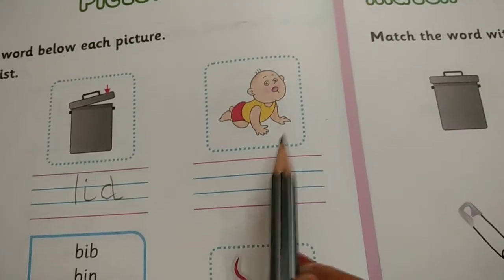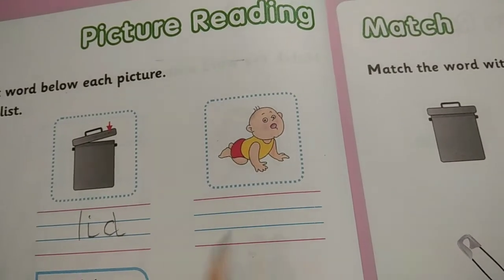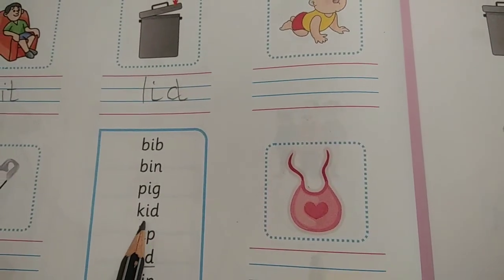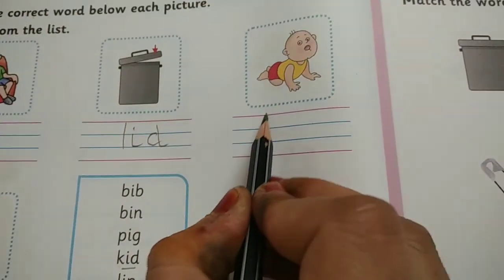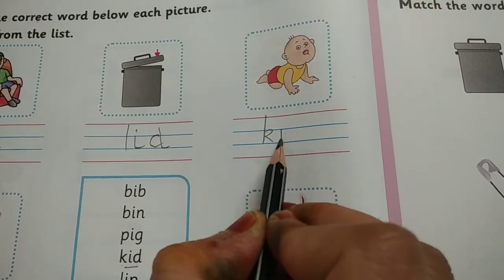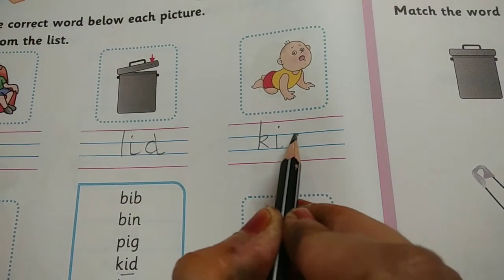What is this? It is a kid. K-I-D. K-I-D. You will underline it. Then write K-I-D.